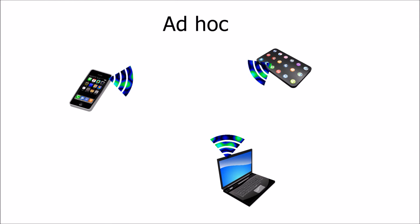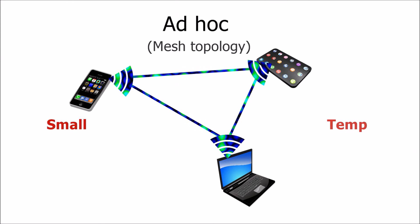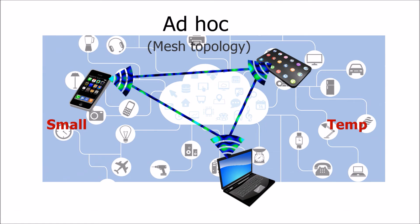A less common mode in wireless networking is called ad hoc. In this design, there is no central point or wireless access point — all devices are connected directly to each other by their wireless NICs. This is similar to the mesh topology. Currently, ad hoc mode is mostly found in small and temporary networks, but with the arrival of IoT, this networking design will likely become more common.